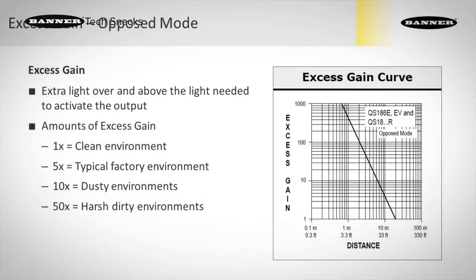To show the amount of excess gain a sensor has, we have an excess gain chart. This is a logarithmic, or log-log for short, chart that shows you the excess gain. I can look at this chart and see that at one — which is the amount of light a sensor needs to turn on — an excess gain of one will turn on a sensor's output.